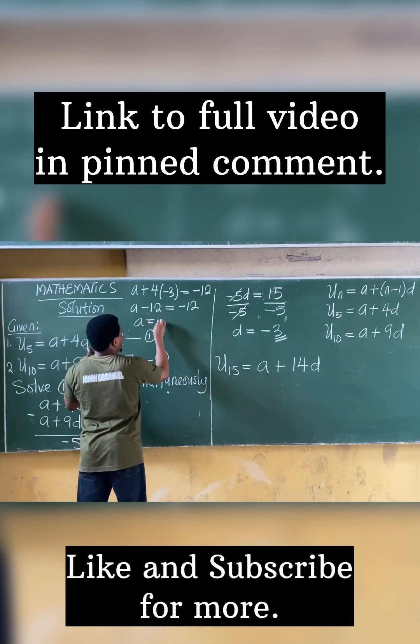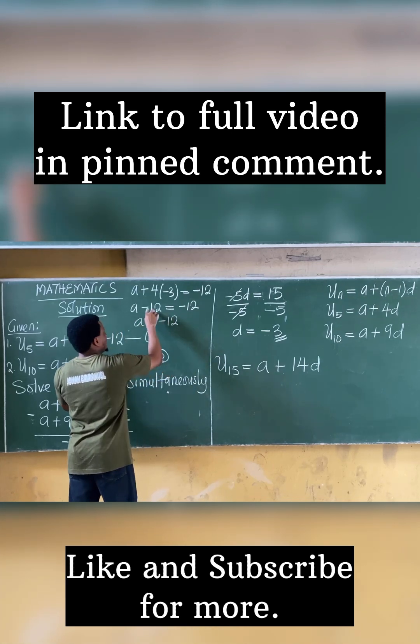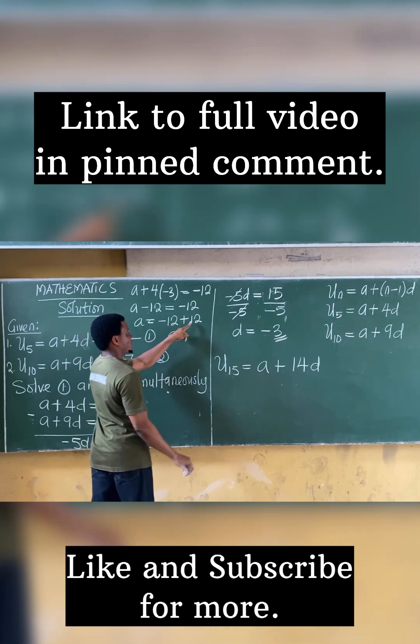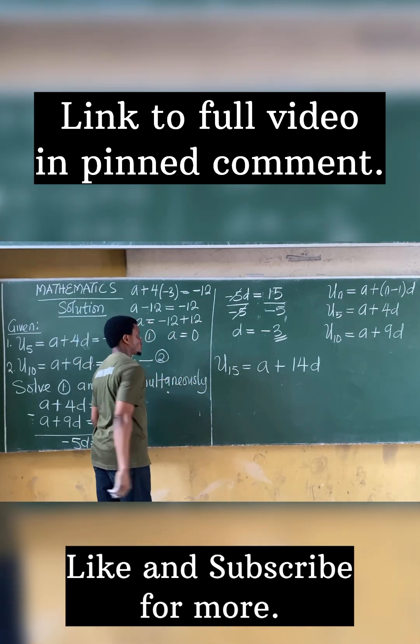A is equal to, this becomes minus 12. Minus 12 comes here becomes plus 12. So A is equal to minus 12 plus 12 gives you 0. So A is 0.